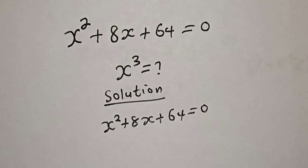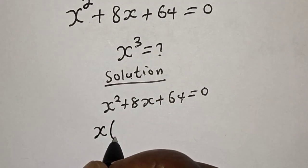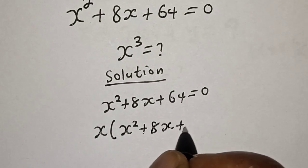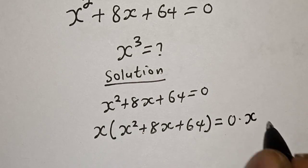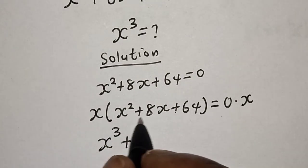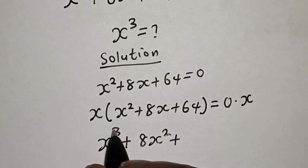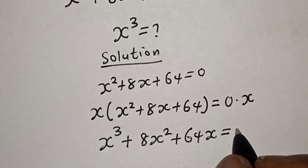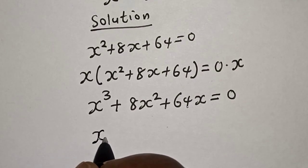Solution: we have the given equation s² + 8x + 64 = 0. Let's multiply both sides by x: x multiplied by s² + 8x + 64 = 0 multiplied by x. Then x times s² is s³, plus x times 8x is 8s², plus x times 64 is 64x, equals 0.